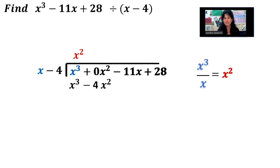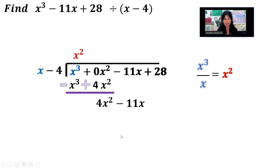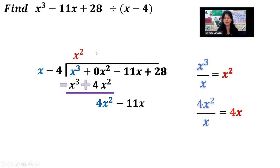Ready to subtract — draw my line, be sure to run the negative all the way through, so this positive becomes negative and this negative becomes positive. Ready to combine: x cubed minus x cubed is nothing. 0x squared plus 4x squared is 4x squared. Bring down the minus 11x and start again. What's in front over what's in front: 4x squared over x simplifies to 4x, so I'm going to pop that in right up there.